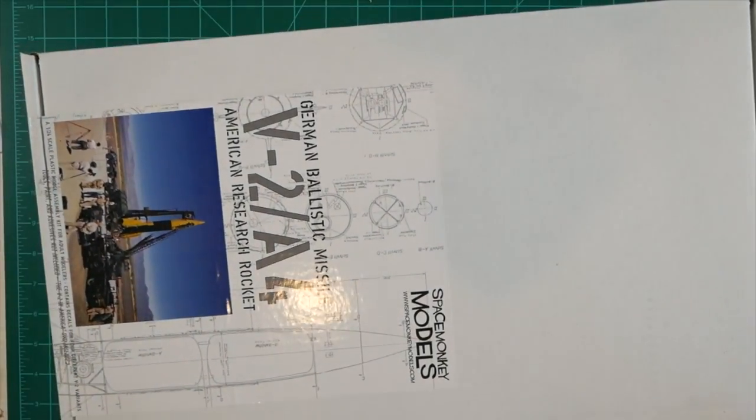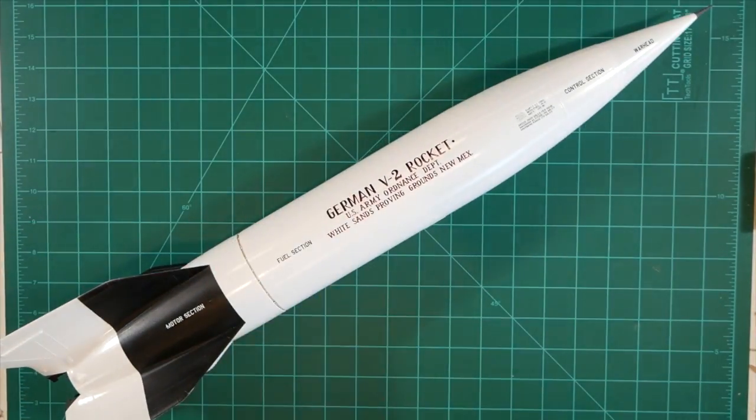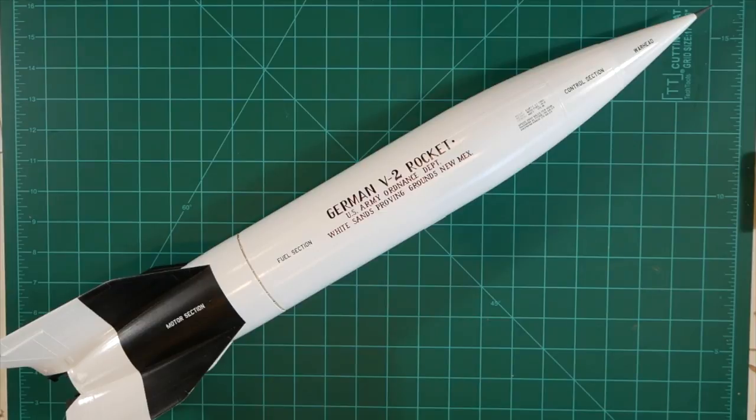When we're done, we will have a model that looks very much like this. This is a finished example of the kit, completed in the White Sands gate guard marking option in the kit. We'll be doing a different finishing scheme on the one we're going to build here though.